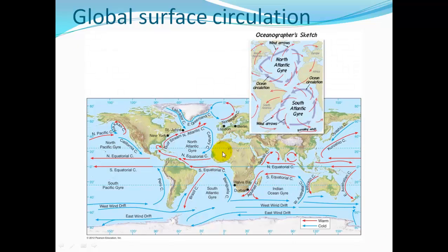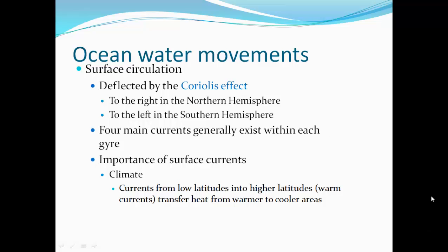Here on this diagram we have the North Atlantic gyre circulating one way, the South Atlantic gyre circulating the other way, the Indian gyre, the North Pacific gyre, and the South Pacific gyre. The direction of ocean currents is deflected by the Coriolis effect — water is deflected to the right in the Northern Hemisphere and to the left in the Southern Hemisphere. Four main currents generally exist within each gyre.